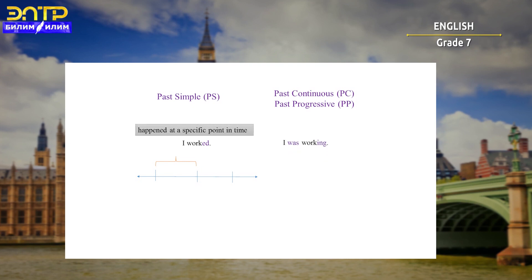Past simple is an action that happened at a specific point in time, and past continuous is about an action that continued during a period.